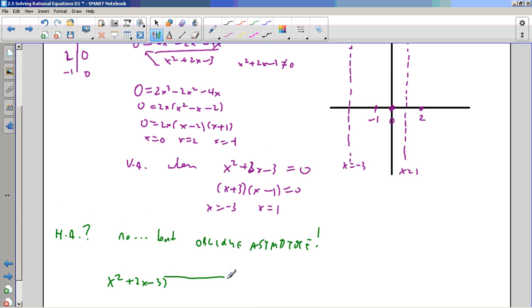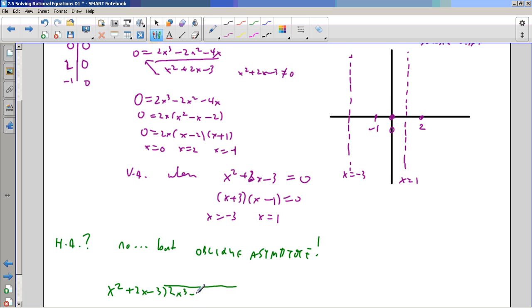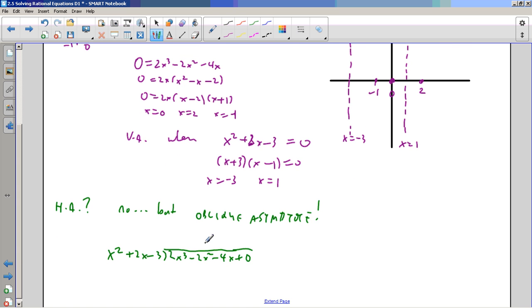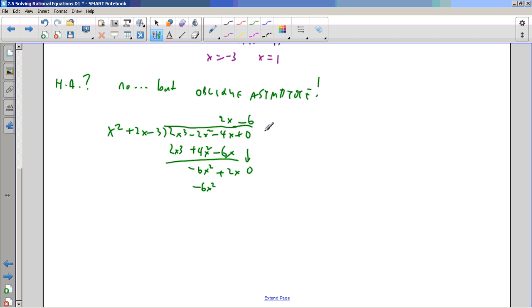x squared plus 2x minus 3 goes into 2x cubed minus 2x squared minus 4x. And then I get my oblique asymptote. And I get 2x cubed plus 4x squared minus 6x and subtract. Negative 6x squared plus 2x. Bring down the zero and minus 6 to finish it off. minus 6x squared minus 12x plus 18 subtract. And I get a mess. But I don't really care about the remainder here, do I? Not really.